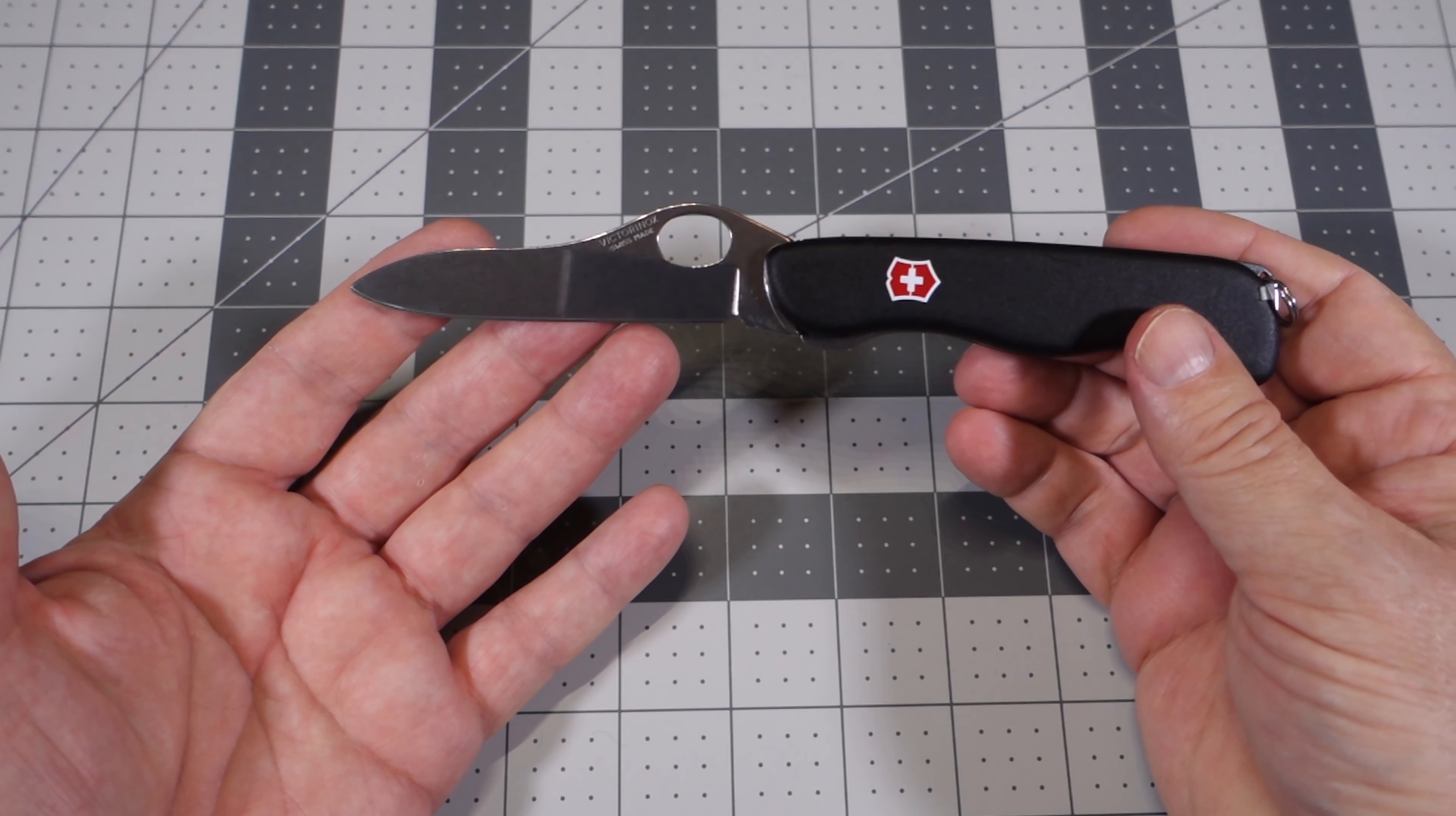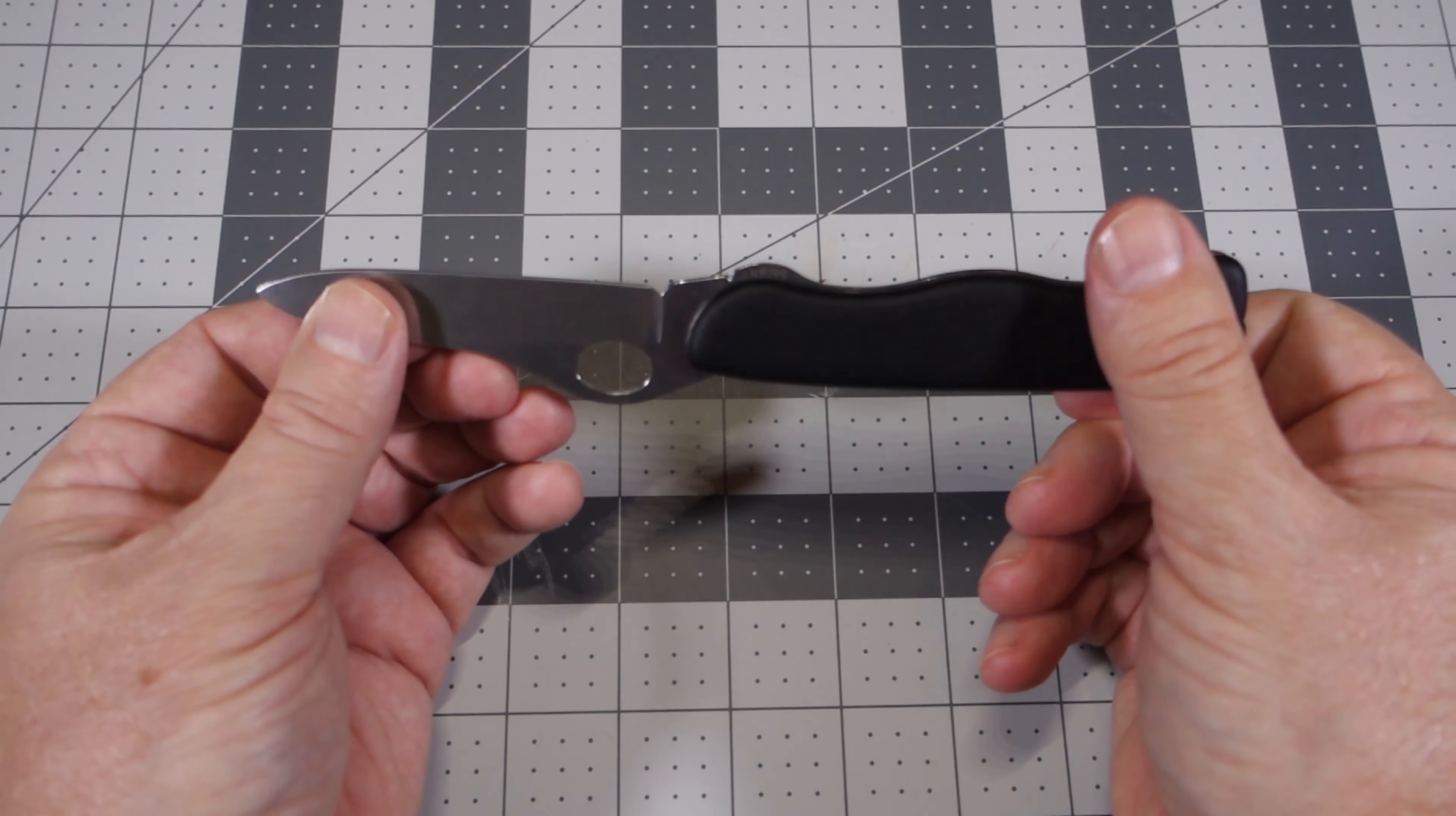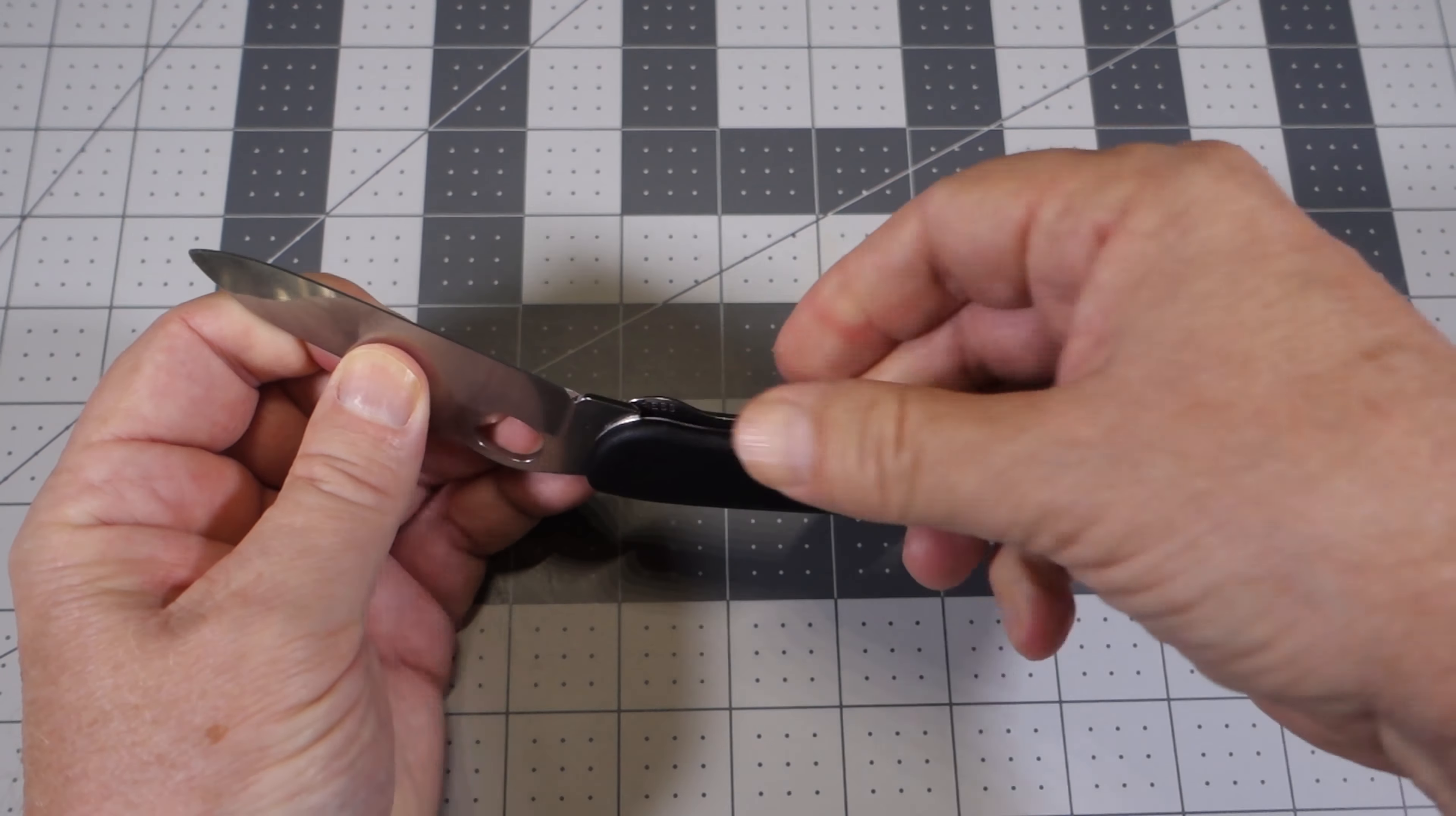For me, at three and three-eighths inches, it's a good size because it can take care of a lot of tasks - EDC tasks or camp chores that you may have. So overall, I think it's a nice size blade.